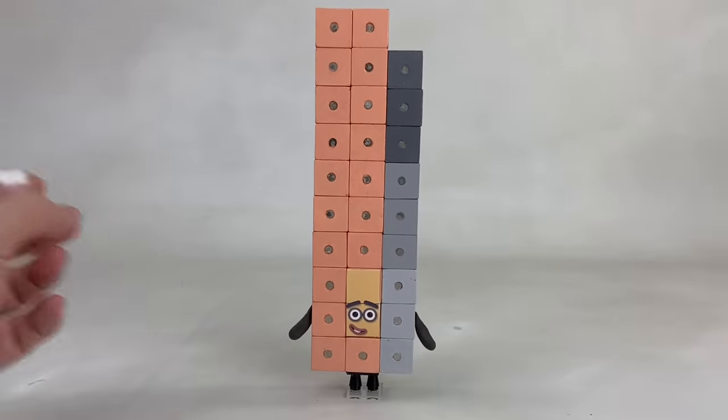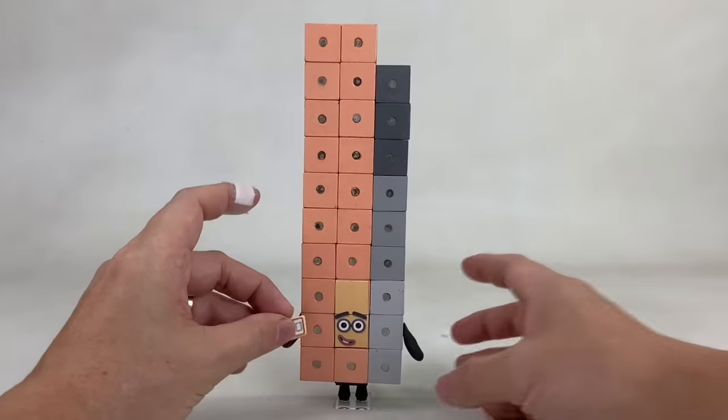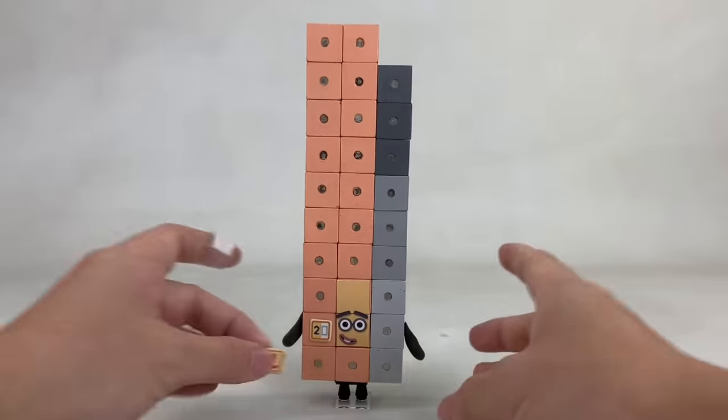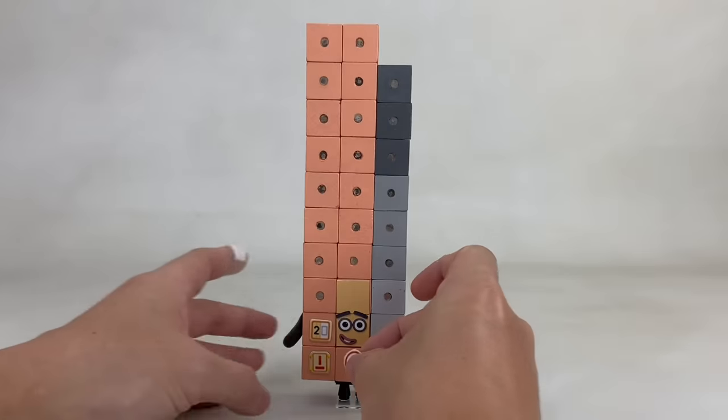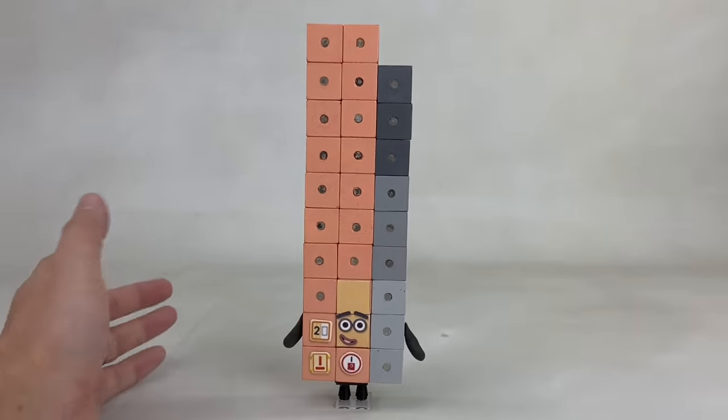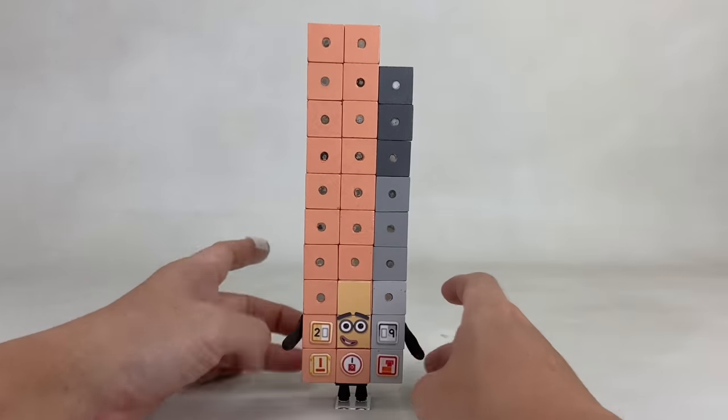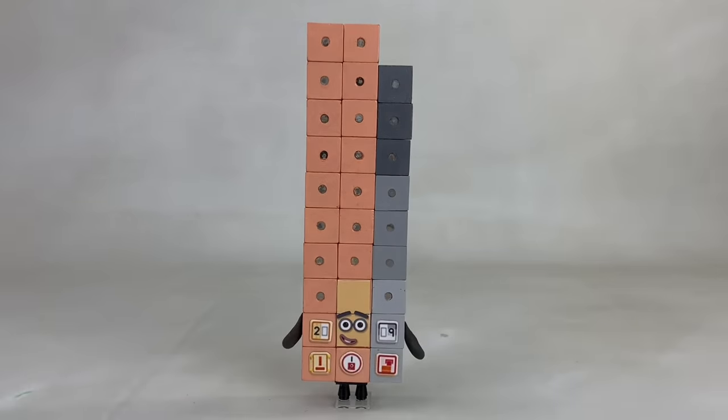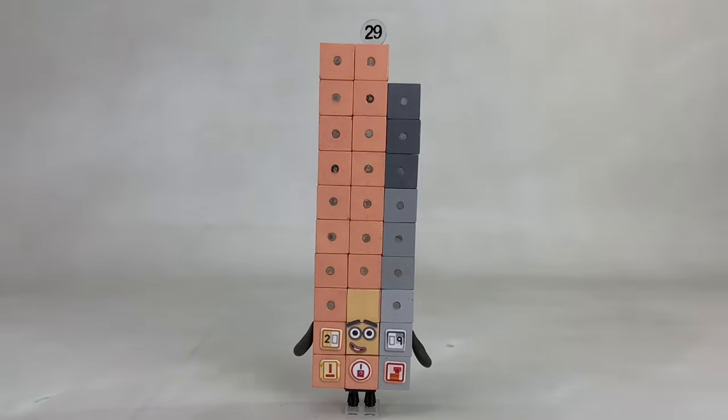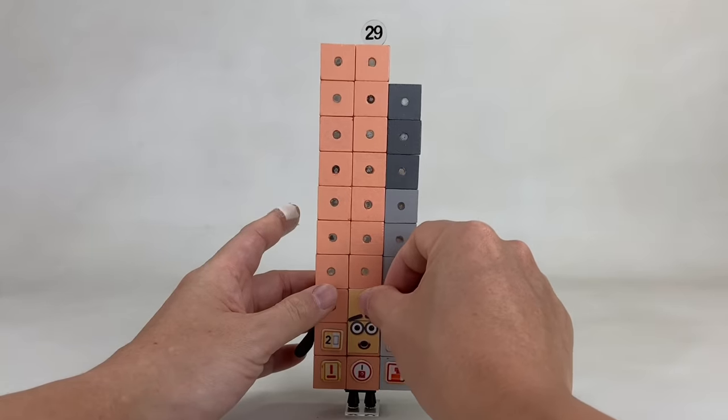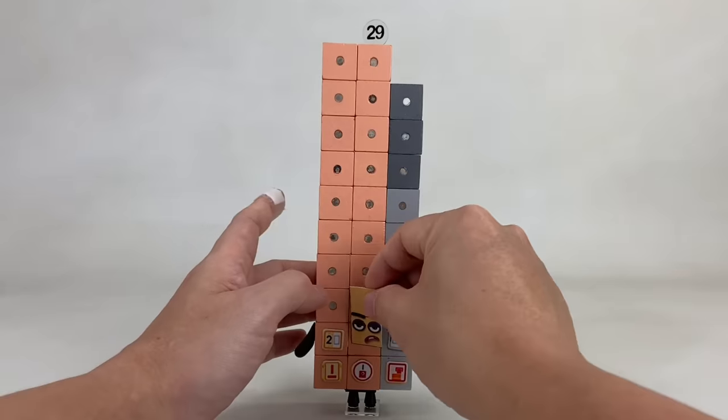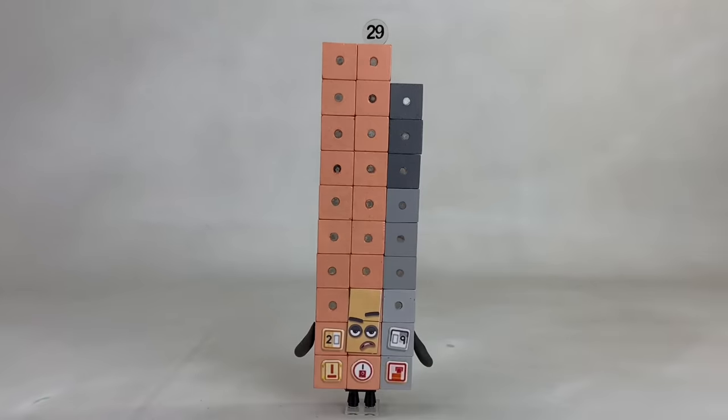Now we can put his legs, arms, and face. And of course, his badges! 29 enjoys creating new clubs and makes badges for each of them. He's a member of several clubs himself. Let's not forget his numberling. We can also change his facial expressions. Here's a surprised face and a sad face.